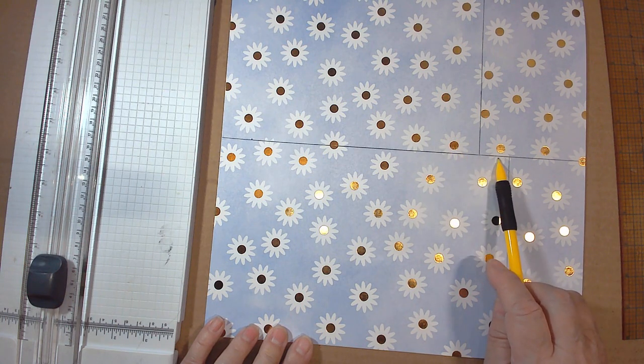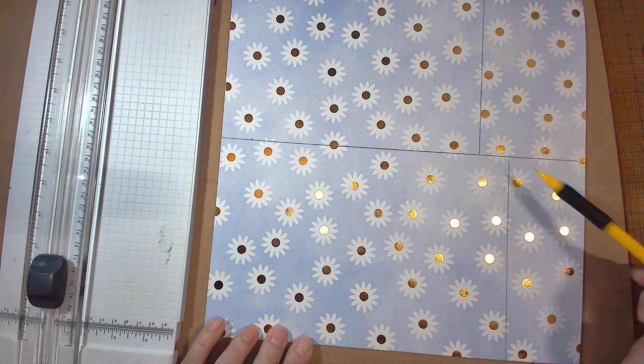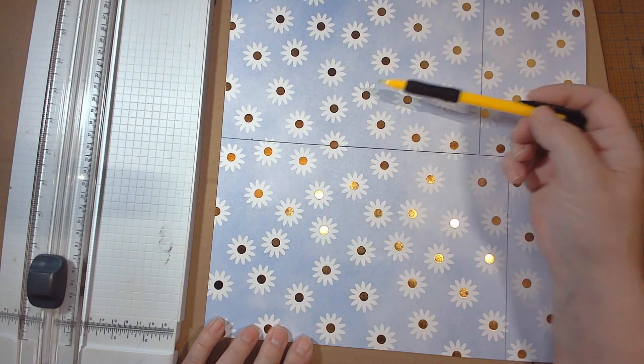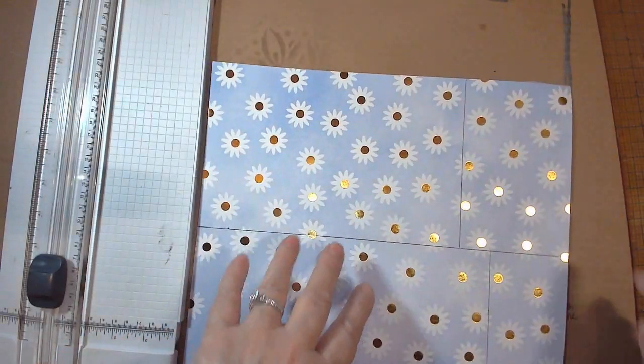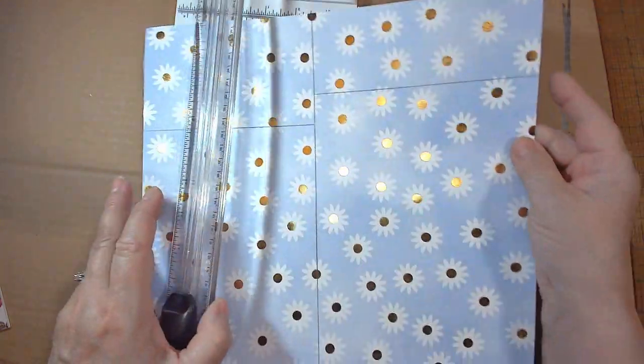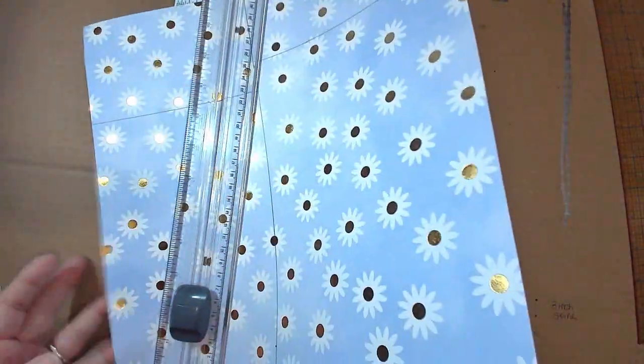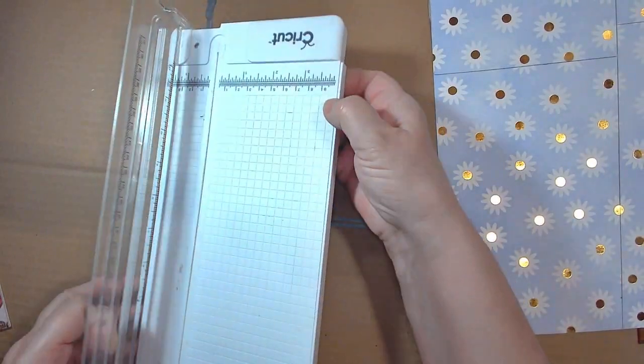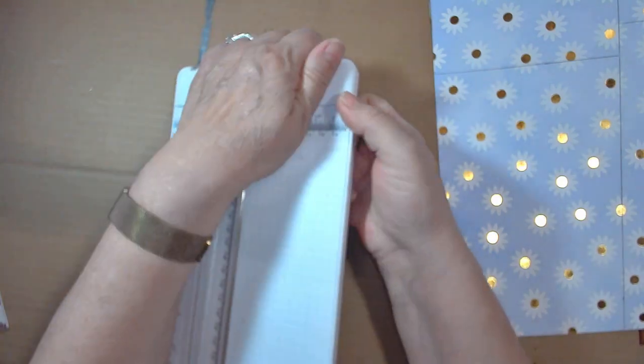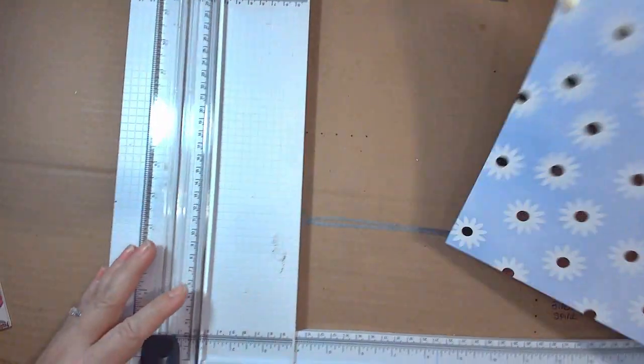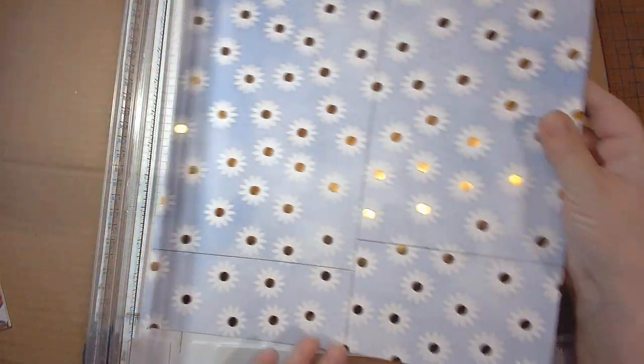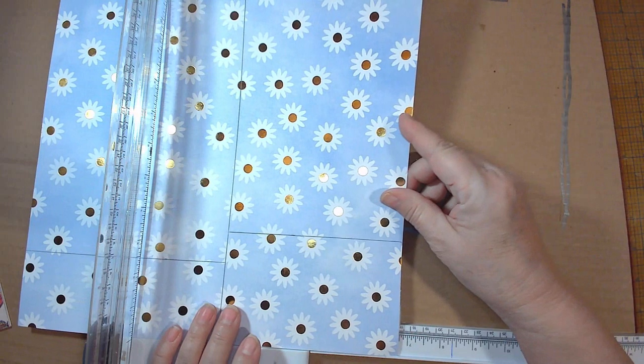This is going to be a mini journal bookmark holder, ephemera pack, and little journal. These are the pieces that make the kit. First cut five and a half inches. Be very careful if you have directional paper, it does make a difference.